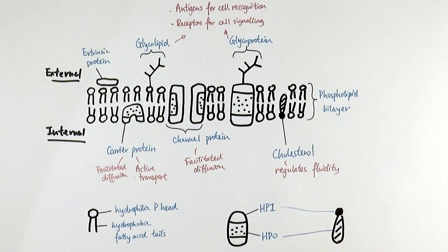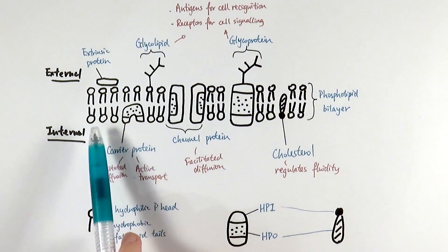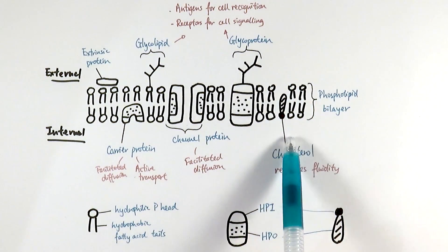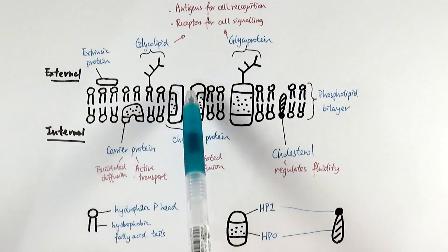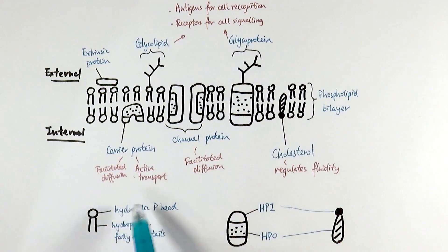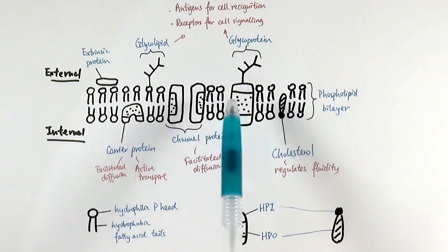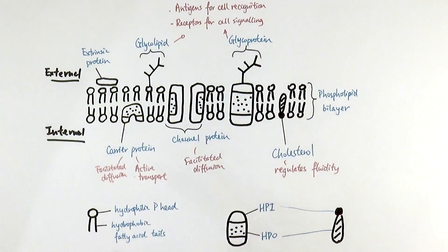To summarize the fluid mosaic model: the membrane is mainly a phospholipid bilayer with hydrophilic heads facing outwards or inwards toward the water, and a hydrophobic core inside that prevents hydrophilic or polar molecules from simply passing through. Polar molecules that need to pass through rely on carrier proteins and channel proteins, enabling facilitated diffusion (down the concentration gradient) or active transport (against the concentration gradient). Glycolipids and glycoproteins — via their carbohydrate chains — act as antigens for cell recognition or receptors for cell signaling. Finally, cholesterol regulates the fluidity of the entire cell surface membrane.